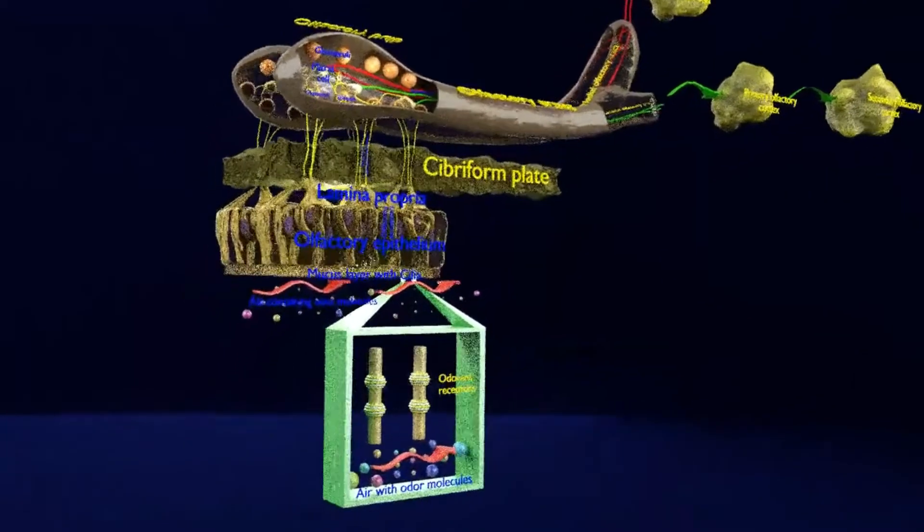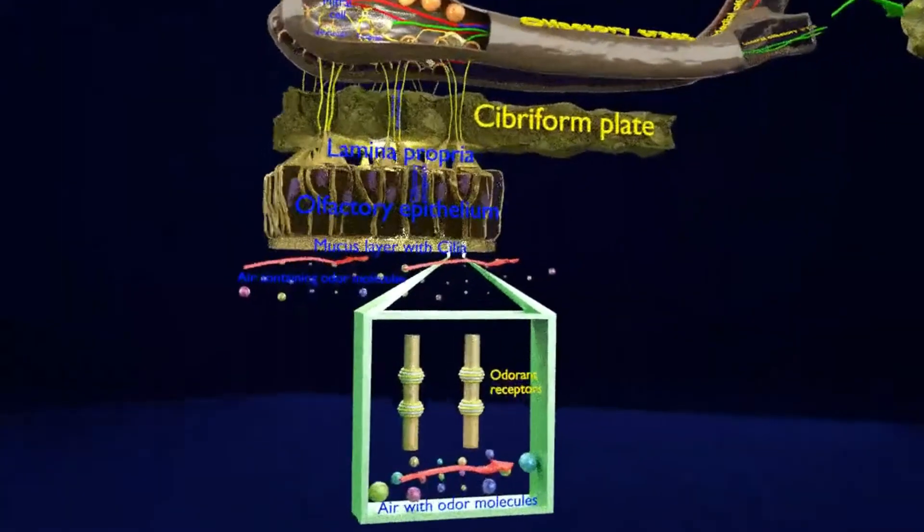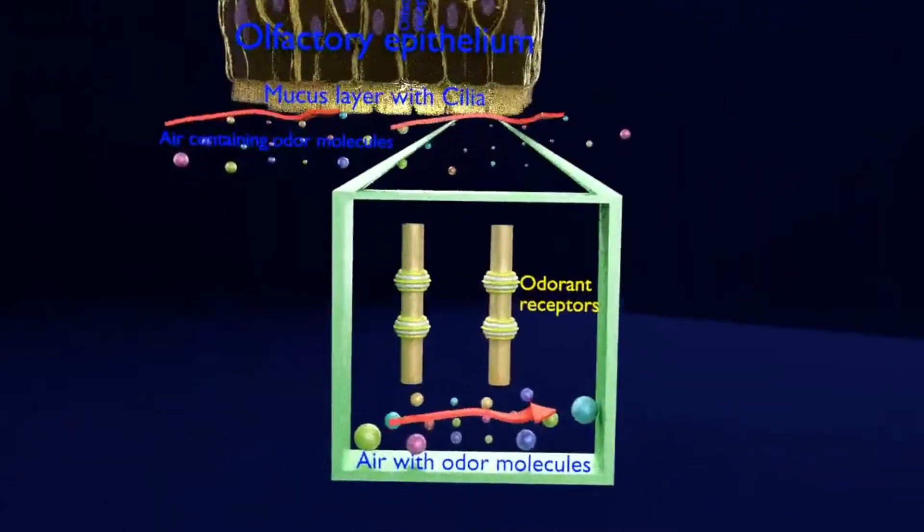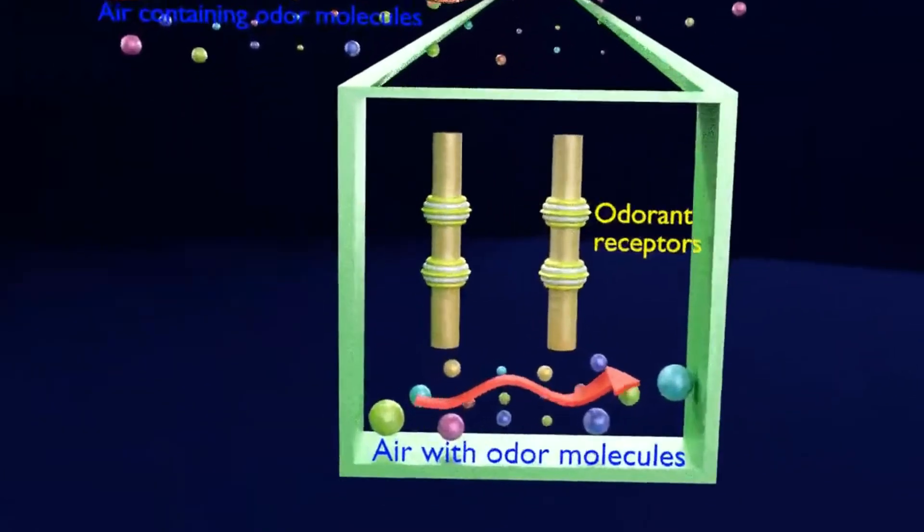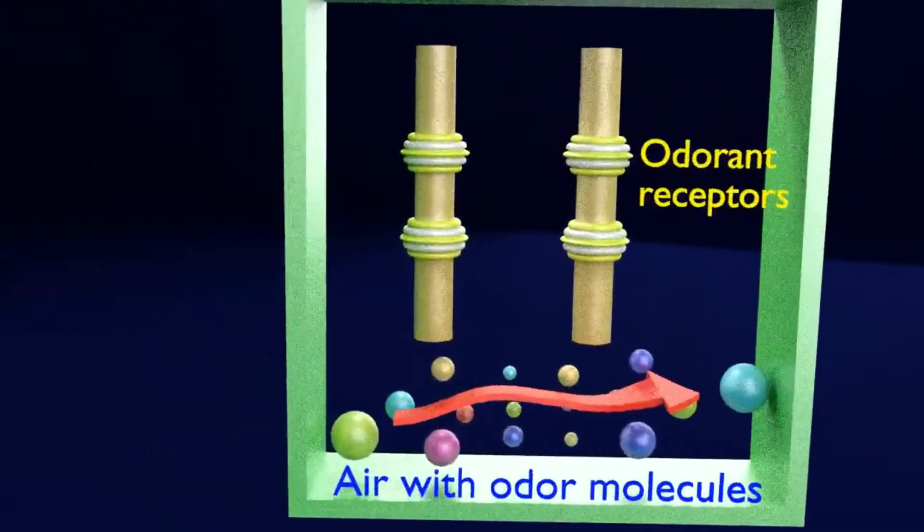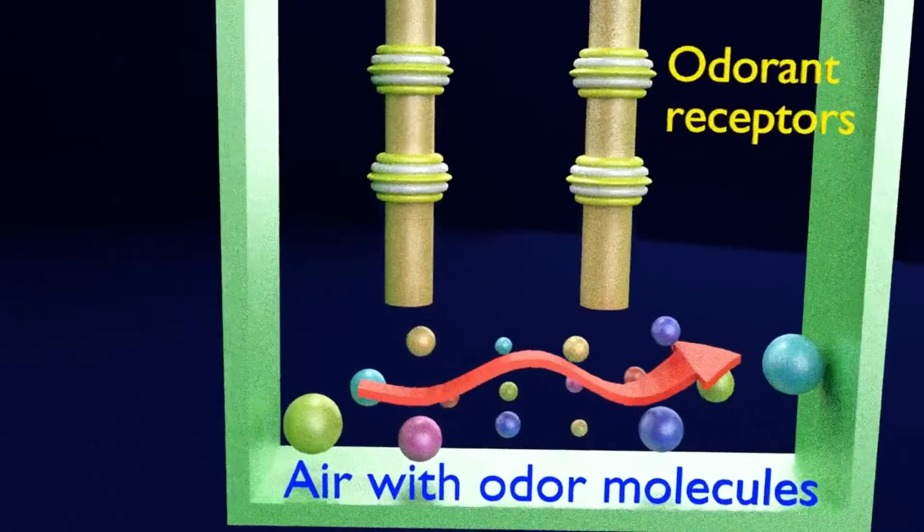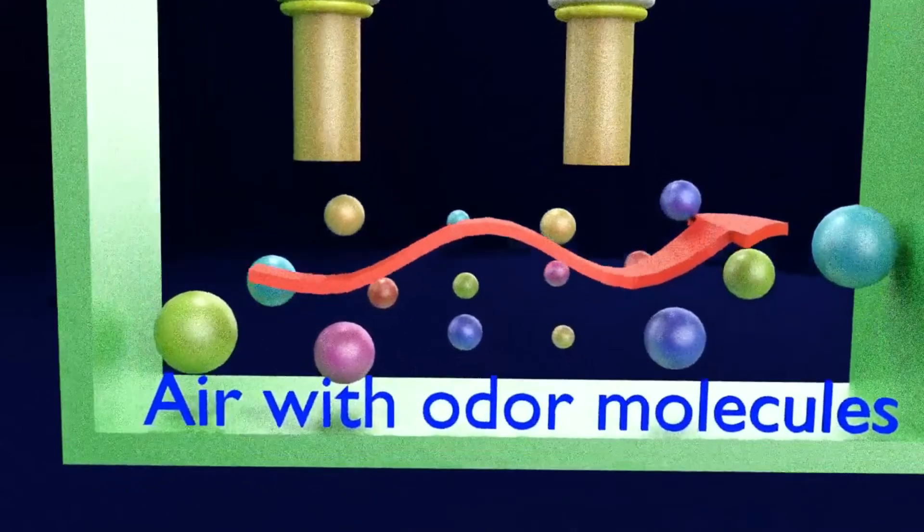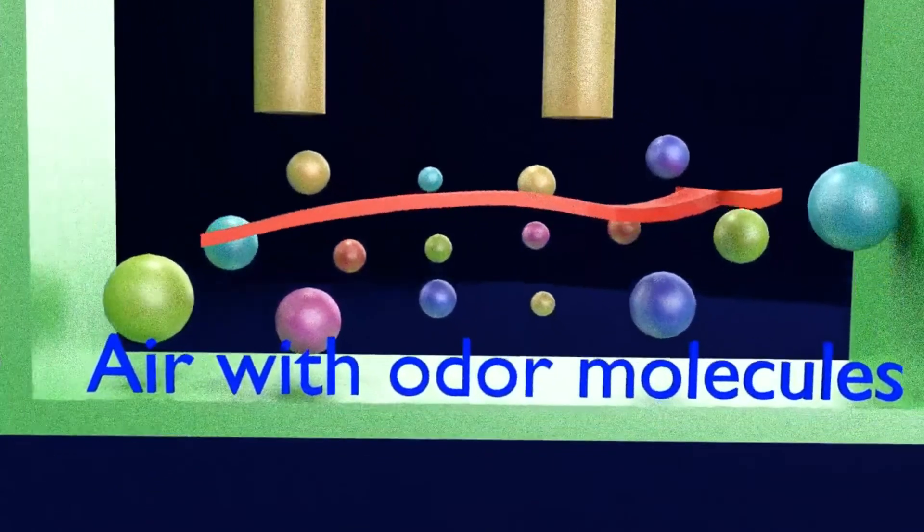As you can see in this magnified view of the ciliated mucous layer of the olfactory epithelium, odorant molecules come along with the air, get dissolved in the mucus secreted by the olfactory epithelium and reach the olfactory or odorant receptors.